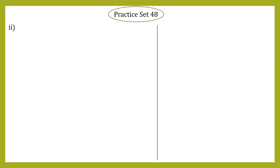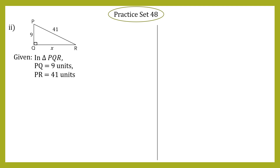Practice Set 48, Question 1, Sub-question 2: We have segment PQ and segment QR, which are perpendicular to each other, so angle Q = 90 degrees. Length of PQ = 9, length of QR = x, and segment PR is opposite to angle Q (90 degrees), making PR the hypotenuse with length 41. Given: PQ = 9 units, PR = 41 units. Find the value of x.